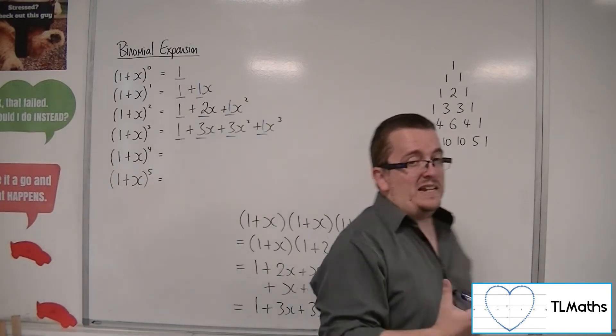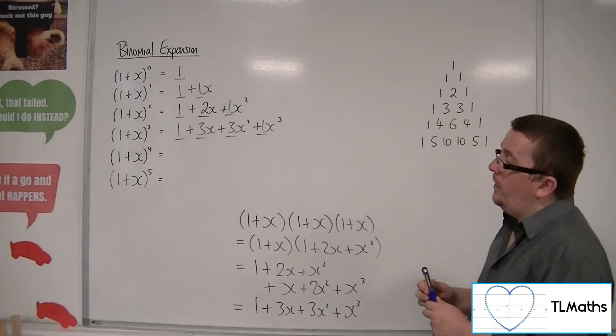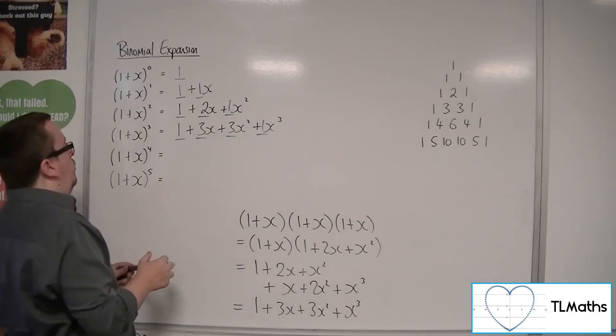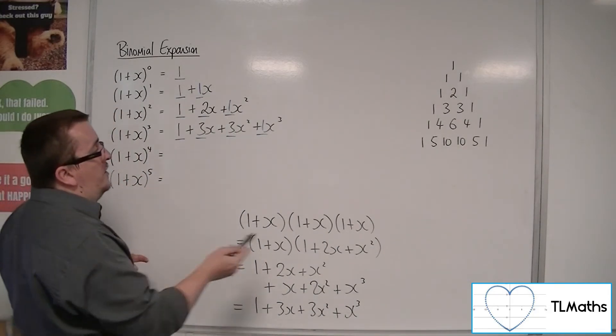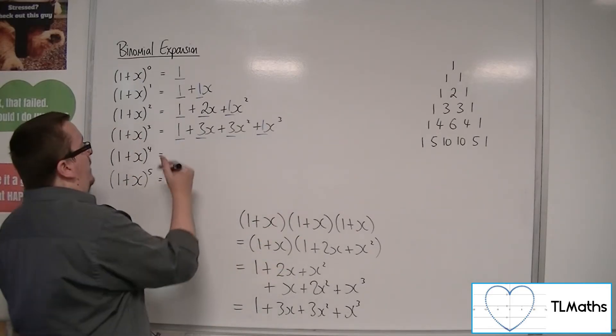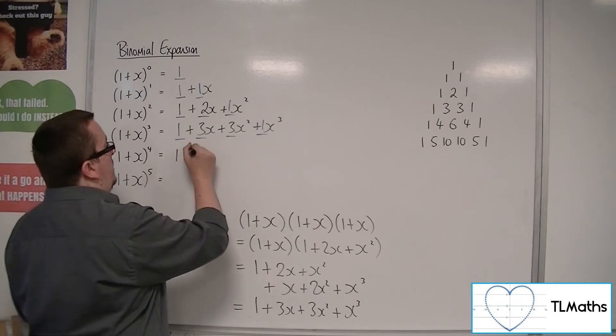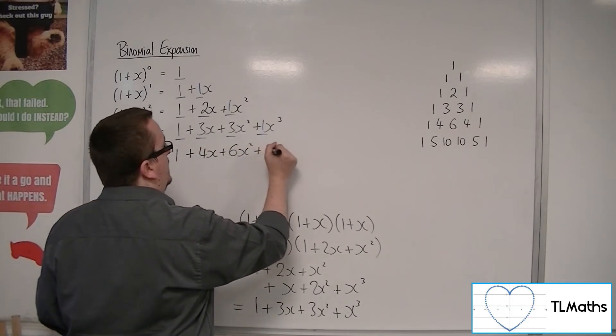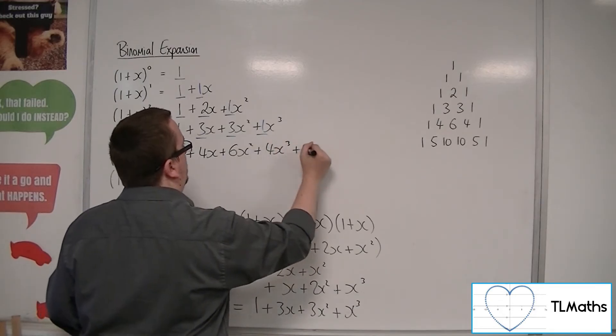So it only stands to reason that now we'd be able to expand (1+x)^4, (1+x)^5 using Pascal's triangle. So you can check these if you like, but you'd be expecting it to be 1+4x+6x^2+4x^3+x^4.